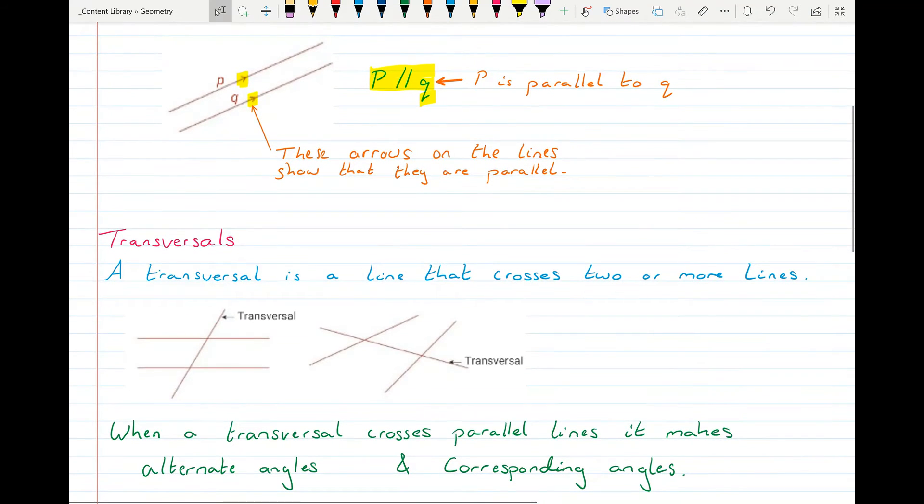Transversals are lines that cross two or more parallel lines. So in these examples, the yellow highlighted line is a transversal. So it's a line that crosses two parallel lines or a line that crosses two lines, in fact, would be a transversal.